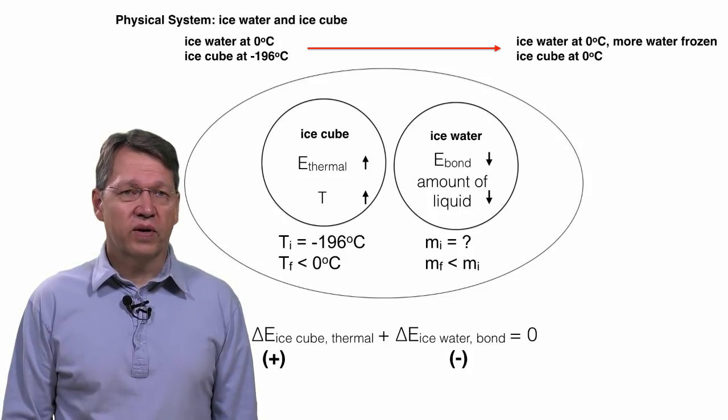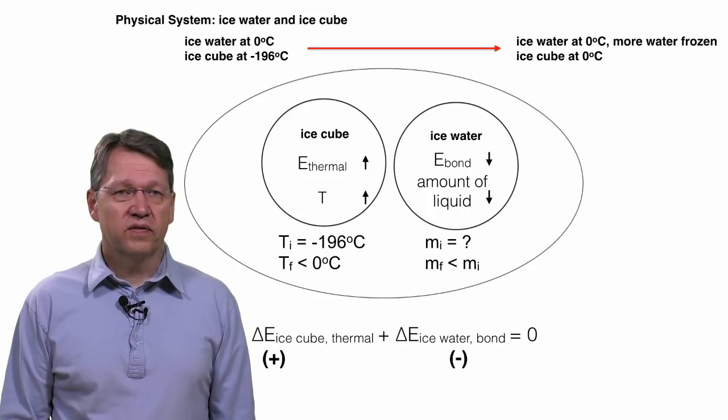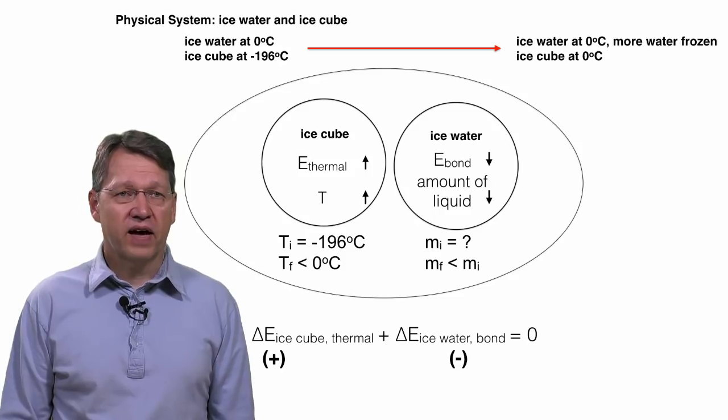As a final check, we can make sure that the signs are consistent. Delta E thermal is positive while delta E bond is negative, so that makes sense since they have to add up to zero.